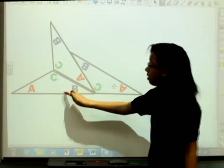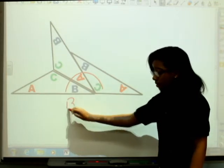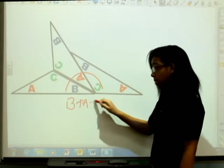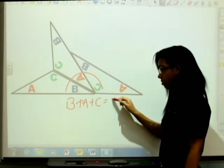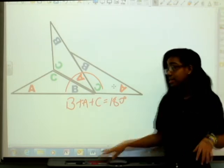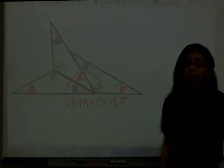So, I'll make an arc here, and B plus A plus C equals 180 degrees. Therefore, the sum of all of the interior angles are equal to 180. Thank you.